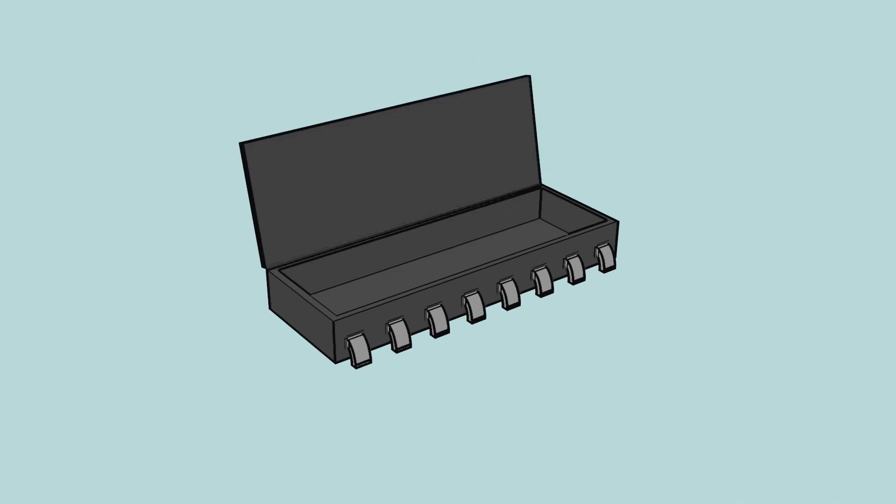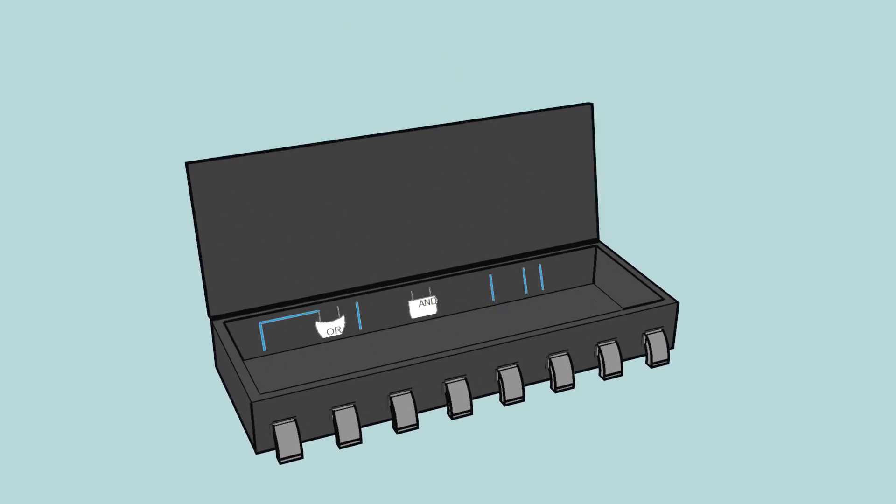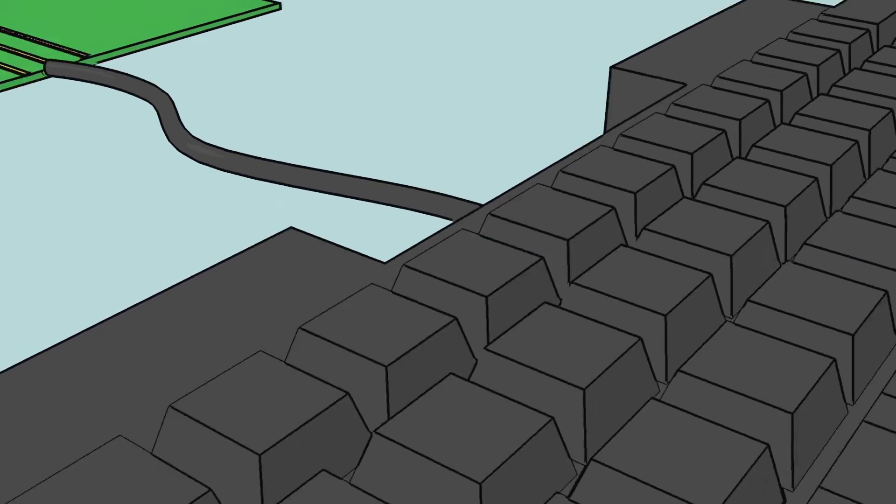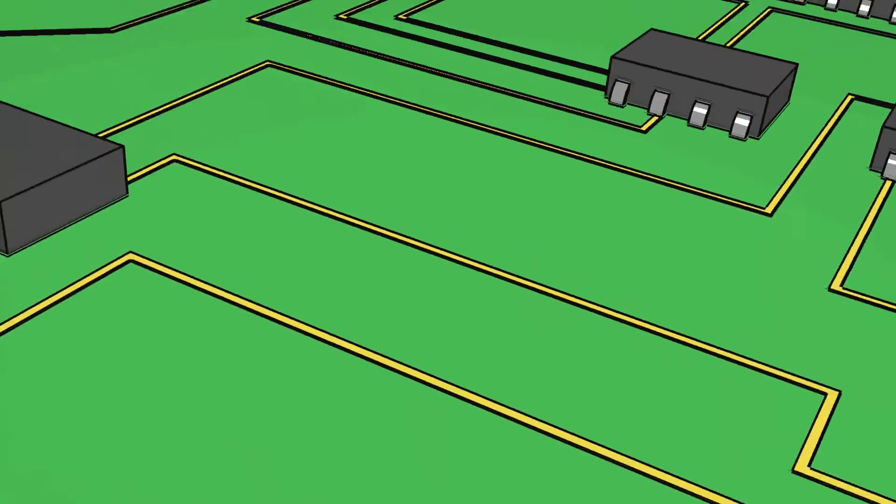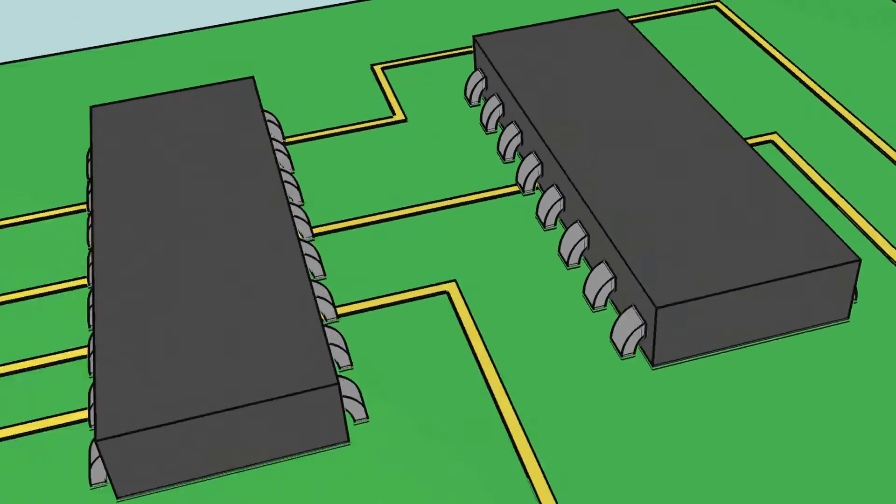Alone, these logic gates don't do much, but when dozens or even millions are chained together in a certain way, they can be used inside IC chips to accept user input, decode binary values, add numbers, read from memory, send to display, send to speakers, and many more.